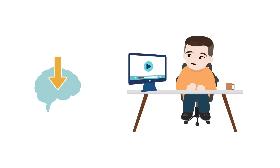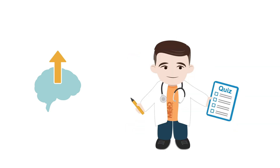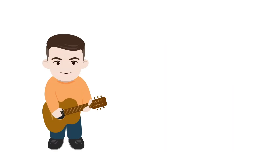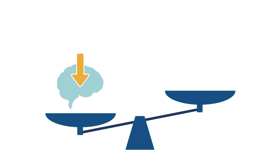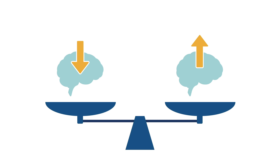Traditional teaching methods focus a lot on encoding through lectures, readings, watching videos, etc. Then we test a student's learning by assessing their ability to retrieve the encoded information. But unless we have them practice retrieving the information first, this is quite unfair. It's similar to teaching a person to play a song on a guitar and then expecting them to automatically know how to play it on a violin. Even though these two stringed instruments are similar, there are still many differences, and this would be an unfair expectation. So instead of just focusing on getting the information into the heads of our learners, we need to put equal or maybe more emphasis on getting the information back out of their heads. Because without retrieval, we can't have true learning.